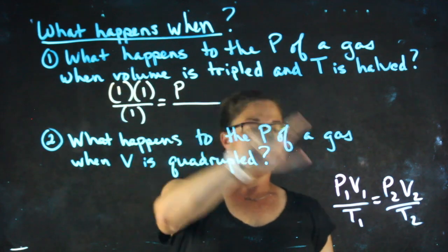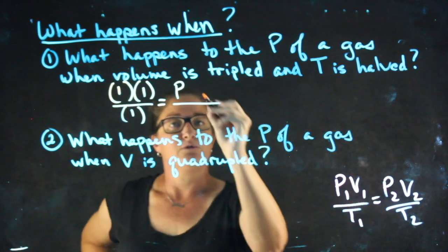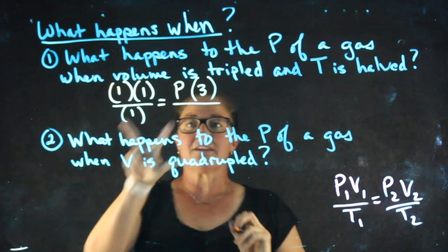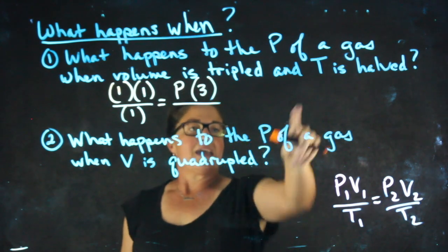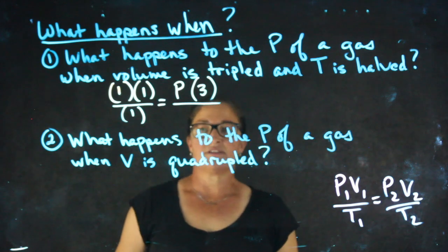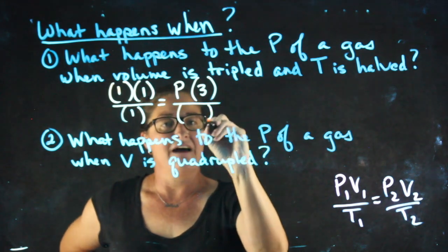The volume is tripled, so what I'm going to plug in for V2 is three, because relative to V1 it's three times as big. And the temperature is halved, so plugging in for T2 I'm going to plug in one half.